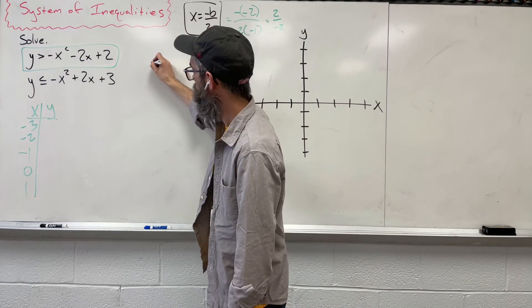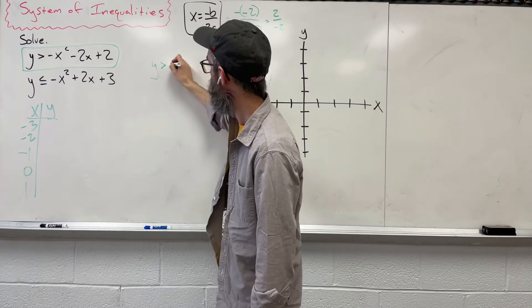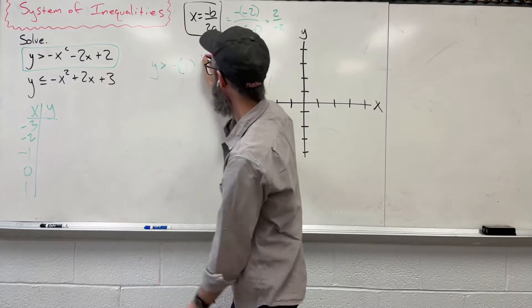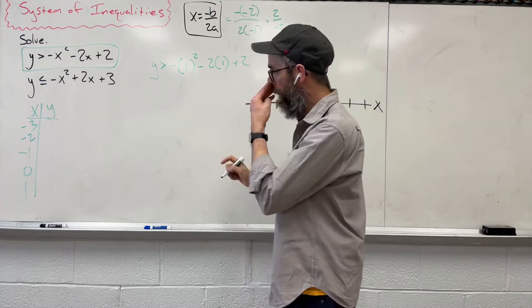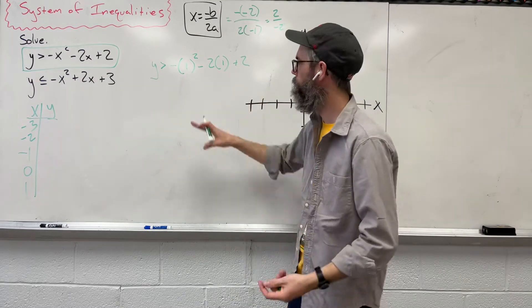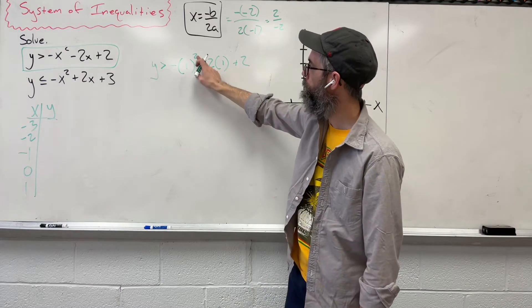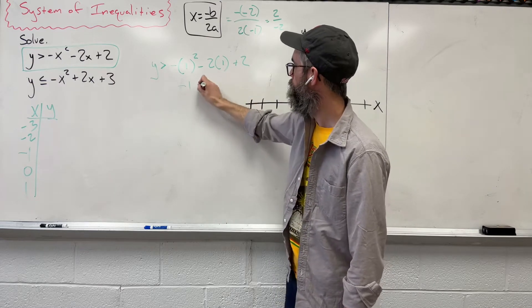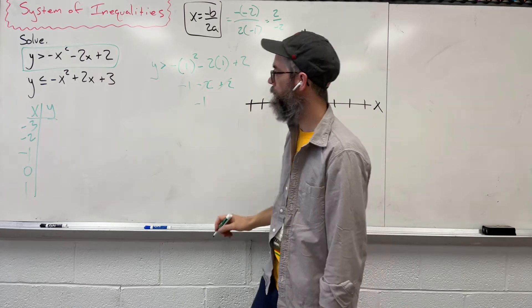Let's start plugging some numbers in. We have y greater than negative 1 squared minus 2 times 1 plus 2. Now we can kind of ignore the greater than sign, we just want to figure out what this number is. So order of operations, 1 squared is 1, bring down the negative, negative 2 and 1 is negative 2 plus 2. These guys cancel out, leaving you with just negative 1.